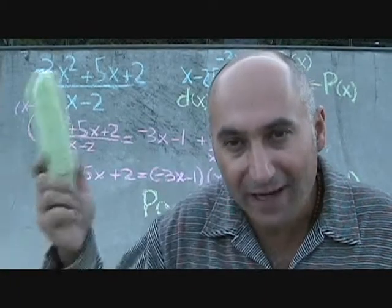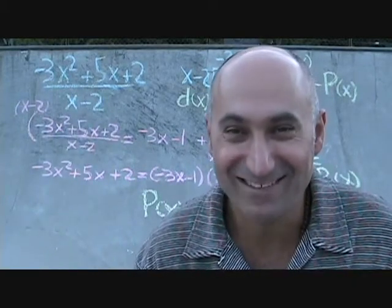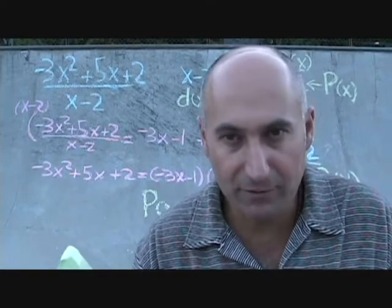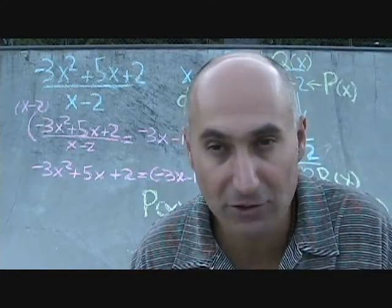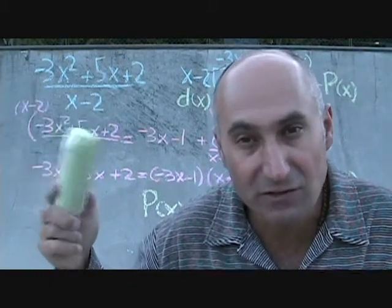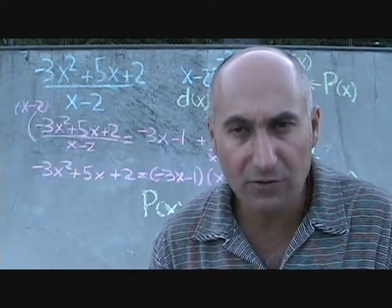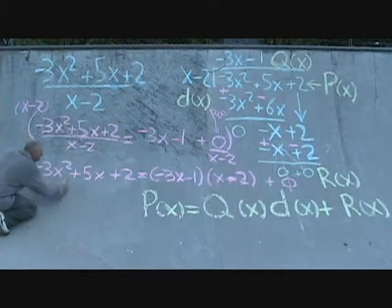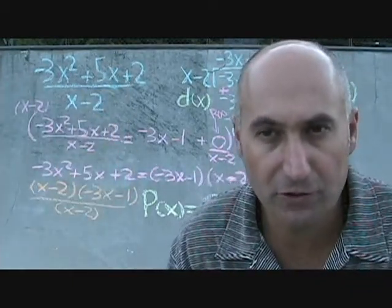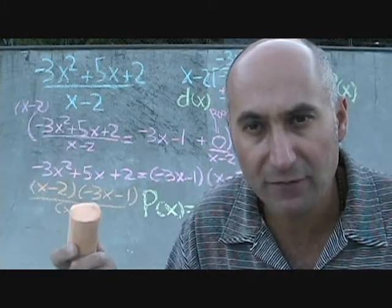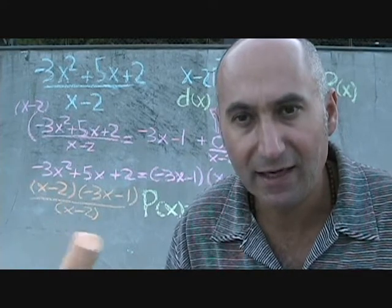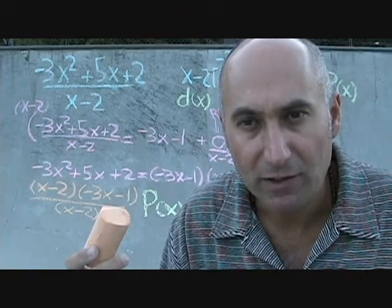Factoring a polynomial means breaking it down to its prime polynomial factors. Whenever you get a quadratic you should immediately try to factor it using all the techniques we've learned: simple trinomial, complex trinomial, quadratic formula, difference of squares, or GCF. The top expression we've already factored two ways — using complex trinomial or the quadratic formula you get x minus 2 times negative 3x minus 1. Divided by x minus 2, the x minus 2 cancels, leaving negative 3x minus 1, which matches our quotient.